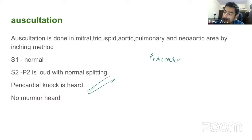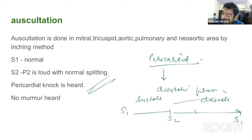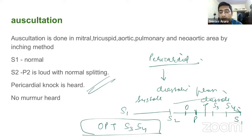The pericardial knock is a diastolic sound. Among other diastolic sounds, we have opening snap, pericardial knock, tumor plop, S3, and S4 — in that sequence. So the order is: opening snap comes first, then pericardial knock, then tumor plop, then S3, and then S4.